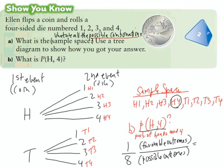If I change one out of eight to a decimal I get 0.125, which is twelve point five hundredths — or twelve point five percent. So the probability of Ellen flipping a coin and landing on heads and rolling a four is roughly 12.5 percent.